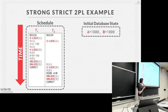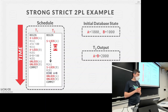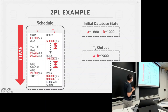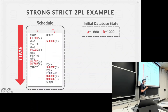With strong strict 2PL, T1 acquires an exclusive lock on A at the beginning and doesn't release it until commit, so T2 can never read the intermediate dirty state. This basically makes it execute as a serial ordering. Regular 2PL may allow some parallelism; strong strict 2PL reduces that further in exchange for avoiding cascading aborts.